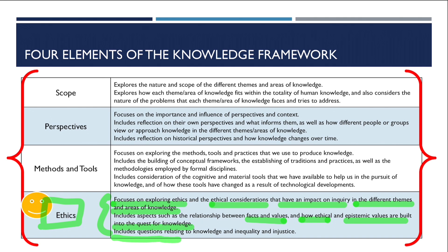The third line includes questions relating to knowledge and inequality and injustice — this is the line you need to think about when writing your conclusion. So to summarize: the first line of the ethics box is for your introduction, the second line is for your examples, and the third line is for your conclusion. Putting it this way makes it much easier to understand.